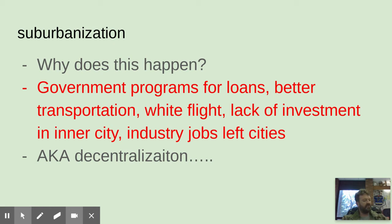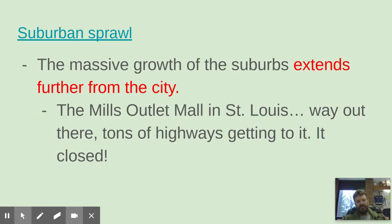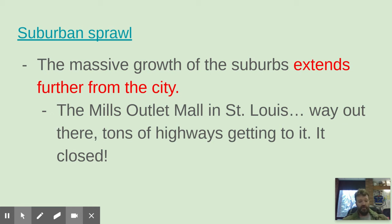Suburban sprawl is the massive growth of suburbs, extending way out from the city. For example, the old Mills Outlet Mall in St. Charles County — way out there, connected by Interstates 70 and 370 — is now completely closed down, just huge concrete nothing in the middle of nowhere. The reason the mall was located there was because of the transportation network. They built these malls out there, people stopped going to malls, and it sits empty. That's a good example of suburban sprawl and why it's not so great — that could still be productive farmland.